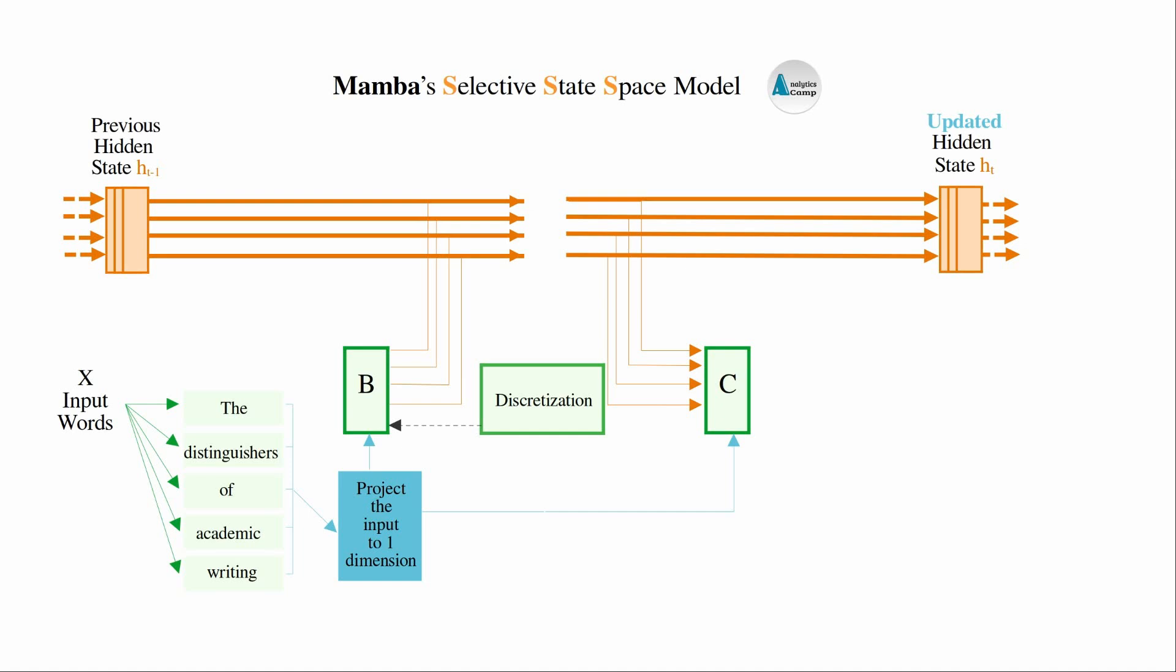The selection mechanism also involves projecting the input words onto the delta parameter before sending it off to the A matrix where the hidden state gets updated.